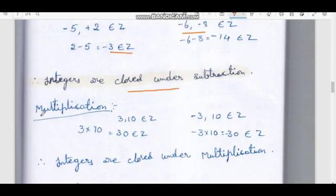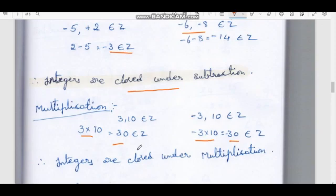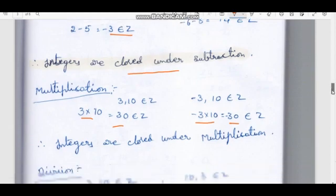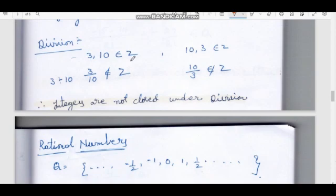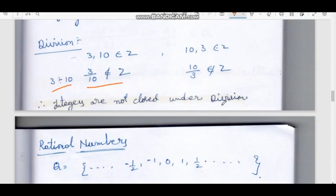Next: multiplication. If 3, 2, 10 belong to Z, then 3 times 10 equals 30, which belongs to Z. For a negative number: minus 3 into 10 equals minus 30, which belongs to Z. Two negatives: minus 10 into minus 3 equals plus 30, which belongs to Z. Therefore, integers are closed under multiplication. For division: 3 and 10 belong to Z, but 3 divided by 10 equals 3/10, which does not belong to Z. Therefore, integers are not closed under division.